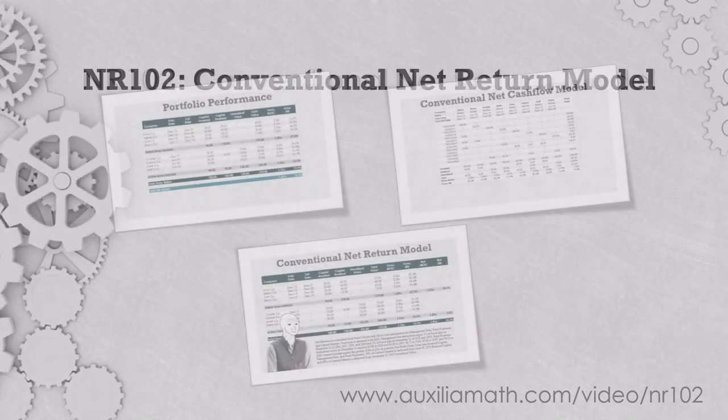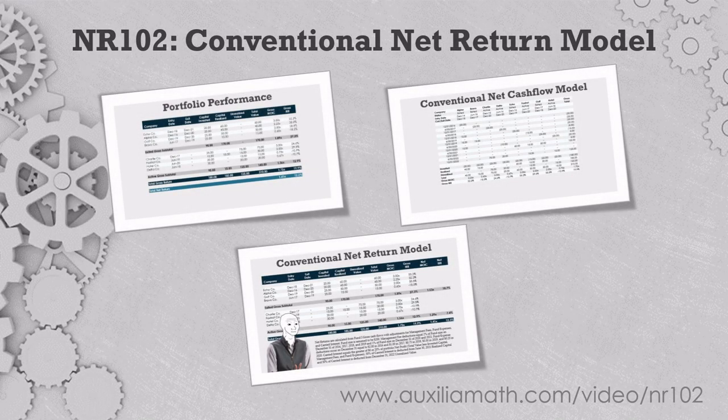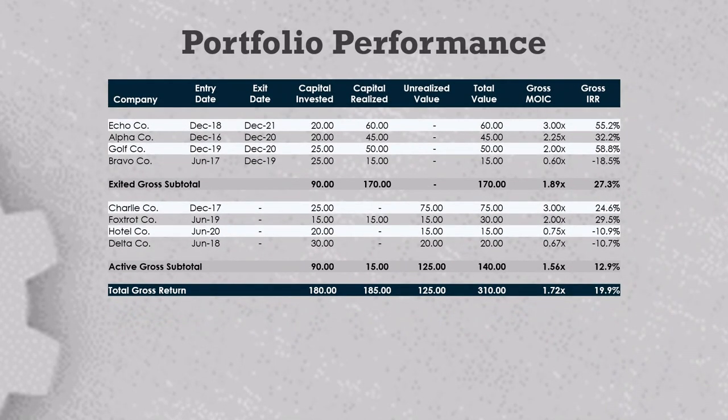This is the second video in the Private Equity Net Returns series, where I describe the traditional net return model for a group of private equity deals that don't have real net returns because they're not real private equity funds. We'll start with a portfolio like this one here. It has four exited investments and four active investments. Overall, it has a gross multiple of 1.7x and a gross IRR of 20%.